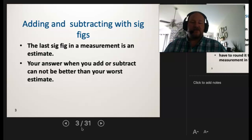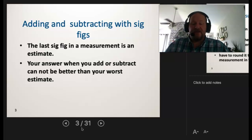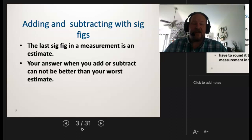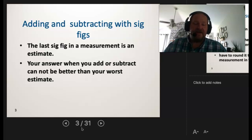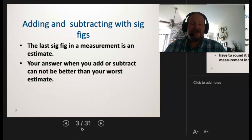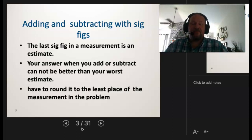If I measure two different tables and add those numbers together using two different instruments, significant figures reflect how good the number is, and the instrument limits how good that number can be. If one instrument is better than the other, it produces a better measurement. When we sum them together, we can only be as good as the less precise instrument. After that, we simply do some rounding following basic rounding rules.